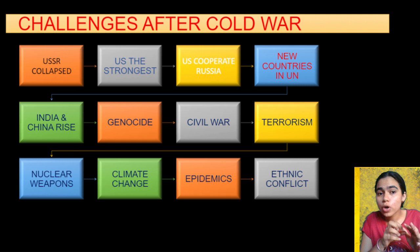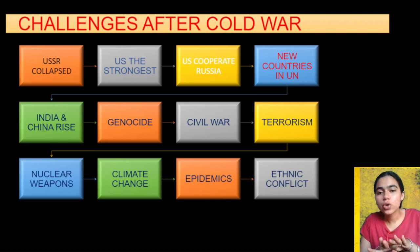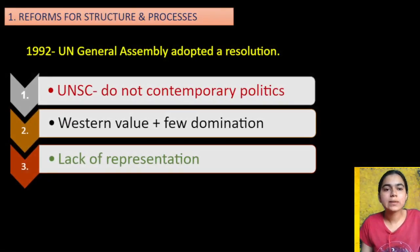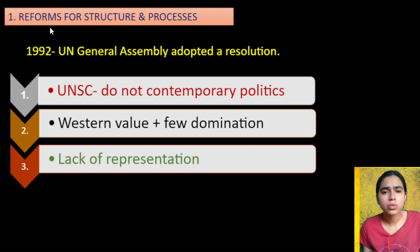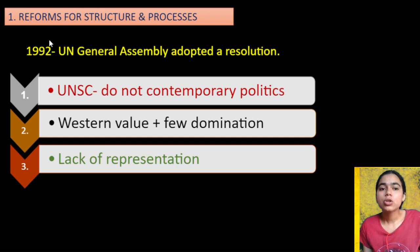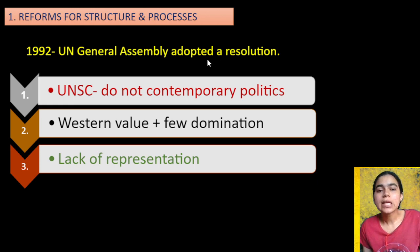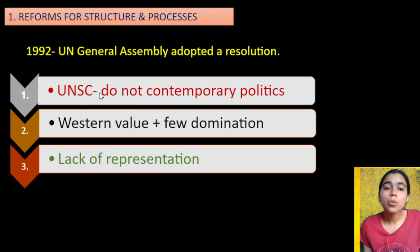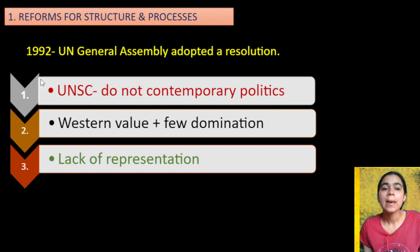In such challenges, the principles of the UN — aimed at stopping the US-USSR conflict — can no longer work; now we have to reform the system. Coming to structure and process: in 1991, the USSR disintegrated. So in 1992, the UN General Assembly adopted a resolution saying that the Security Council is not aligned with contemporary politics — meaning it doesn't reflect the present situation, and it doesn't have appropriate members accordingly.